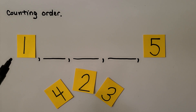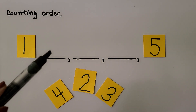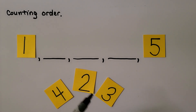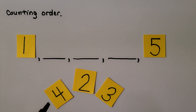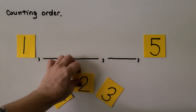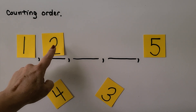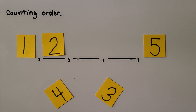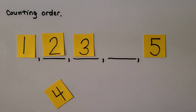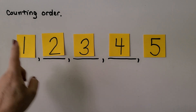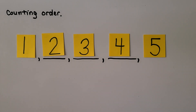Here we've got cards with numbers on them. We have one, then three empty spaces, and then a five. We need to put these cards in the correct space so the numbers are in counting order. The two goes first, then the three, and this must be the four. One, two, three, four, five — we put them in counting order.